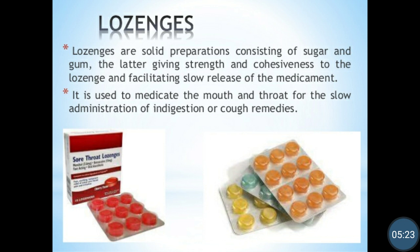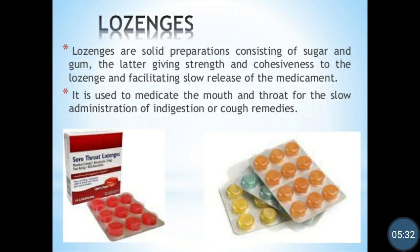The next type of tablets are lozenges. Lozenges are a type of tablets — solid preparations consisting of sugar and gum, the latter giving strength and cohesiveness to the lozenges and facilitating slow release of the medicament. Well-known examples are the Strepsils cough lozenges or the Vicks lozenges.